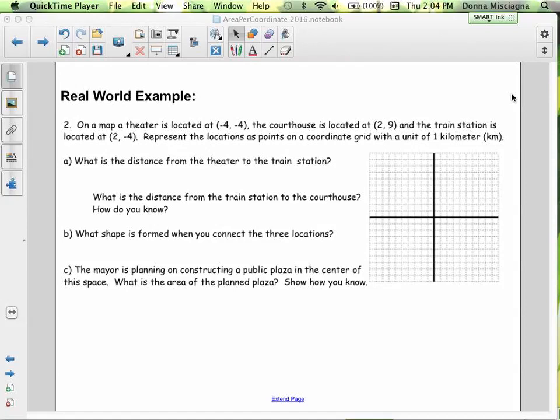On a map, the theater is located at negative 4, negative 4. Let's graph that if we can actually find it.